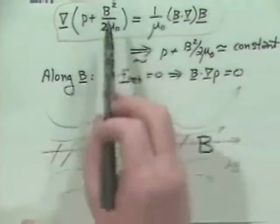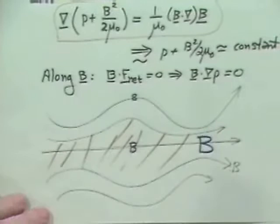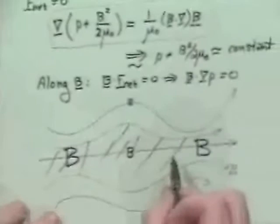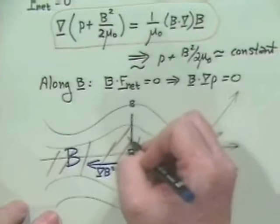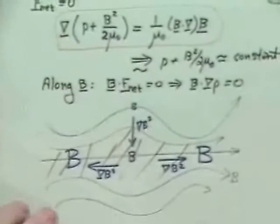Which direction is grad B squared? Well, in the magnetic mirror machine, along the magnetic field lines it's both ways. Grad B squared is that way. But radially it's from outward to in. So this is grad B squared.